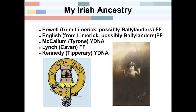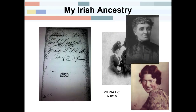This is my Irish ancestry. If anyone knows any Powells or Englishes from Limerick, Ballylanders, I'd be happy to pay for a test. McCallum from Tyrone — happy to do a Y-DNA. Lynch from Cabin — Family Finder. Kennedy from County Tipperary — Y-DNA and Family Finder. These are the lines I'm researching. This is my grandmother, little Kitty — after they left Ireland they settled in Chicago. She married a McCallum, and this is the McCallum family crest. This is my direct female mitochondrial line: my grandmother, her mother Cora, her mother Johanna.